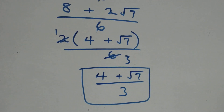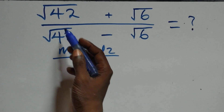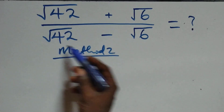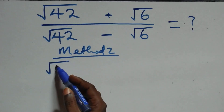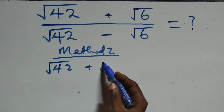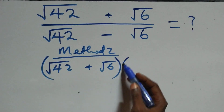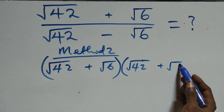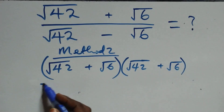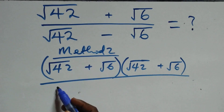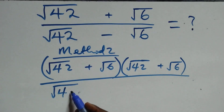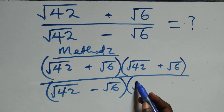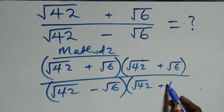For Method 2, we rationalize the original expression directly. We multiply the numerator and denominator by the conjugate of the denominator, which is (√42 + √6).